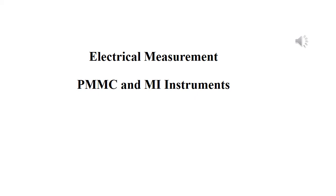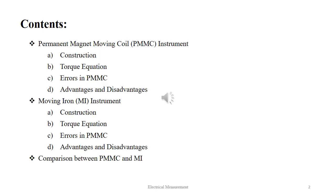In today's discussion on electrical measurement, we will talk about PMMC instrument and MI instrument. About permanent magnet moving coil instrument, we will talk about its construction, torque equation, errors, advantages and disadvantages.